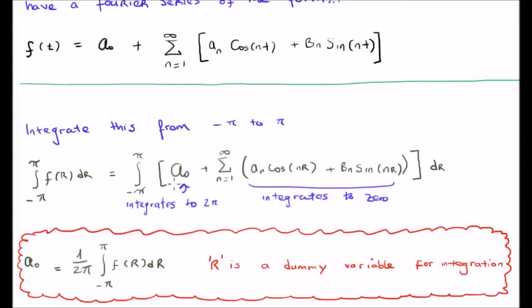Note, by the way, if we had defined the Fourier series as having a sub 0 over 2, well, then this scaling term would be slightly different, but of course, it would not affect your results.